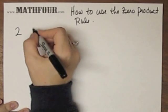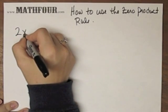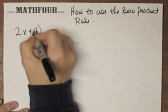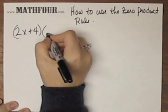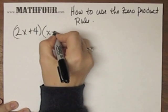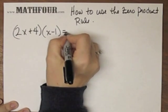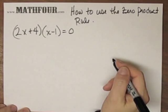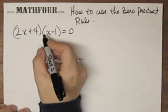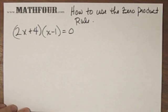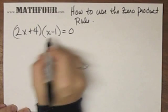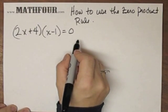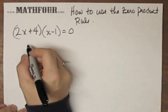We're talking about the zero product rule, which means if you multiply any two things together to get zero, then one or the other has to be zero. Subsequent videos will explain why this is the case, but here's how you would use that fact.